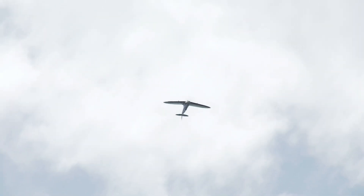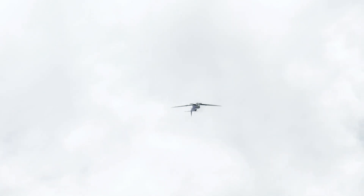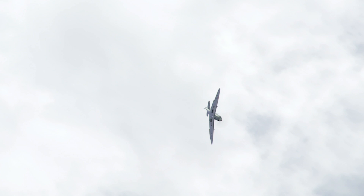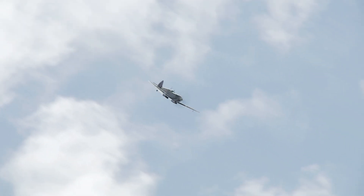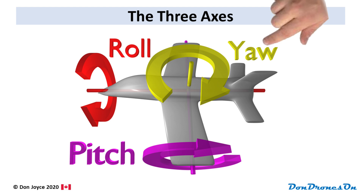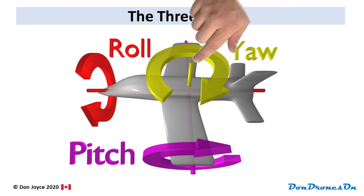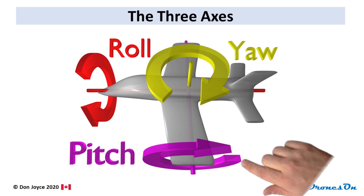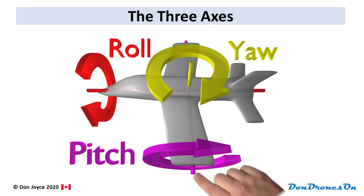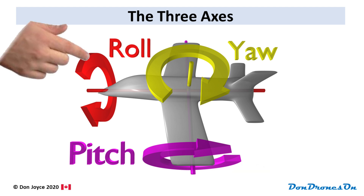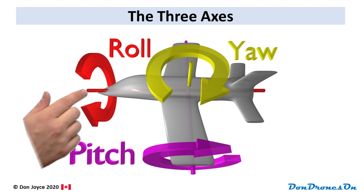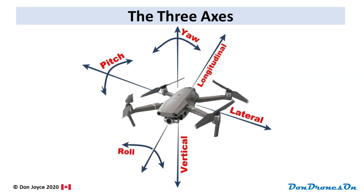An aircraft operates in a complex environment of moving and changing air, and as such must maintain control in three axes: yaw, pitch, and roll. Yaw refers to the aircraft's directional rotation to the left or right around an axis that is up and down. Pitch is an aircraft's rotation up or down around a lateral axis running from wing to wing. Roll is rotation around a longitudinal axis running from nose to tail. Even though these terms were defined in terms of traditional winged aircraft, the same yaw, pitch, and roll terms are used for helicopters and even multi-rotor drones.